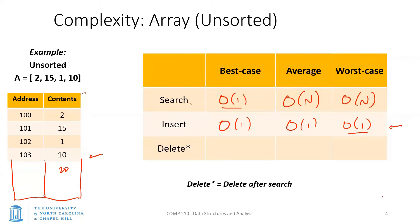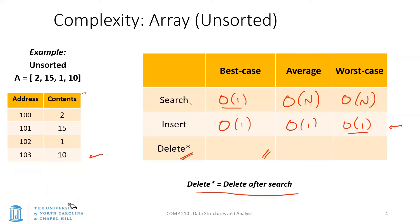Now I'll define delete-star, a special operation which is delete with the assumption that you've already done a search and already know where the element is located. So delete-star means delete after a successful search. Let's look at the best, average, and worst cases. Say we're trying to delete the number 1 — we've already done a search, it responded that 1 is present at a particular index, so we already have its address.